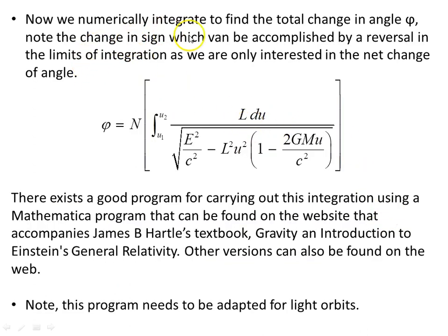Now we numerically integrate this to find the total change in the angle phi, as you saw in the diagram on the first page. Note the change in sign, which can be accomplished by reversal of the limits of integration. We are only interested in the net change of angle, so whether you include the minus sign or not, if we have a minus sign here, then we are integrating in the negative direction. If we have a plus sign, we are going in the anti-clockwise usual conventional direction. We are really just interested in the net change of angle, not really the direction.